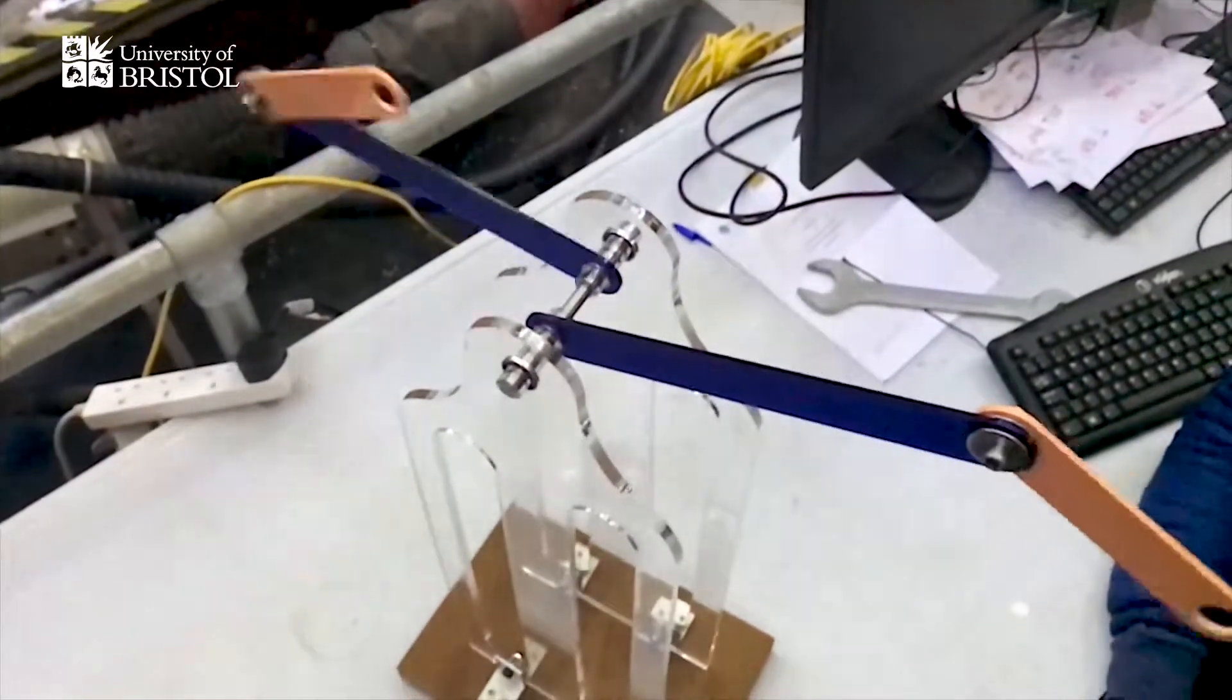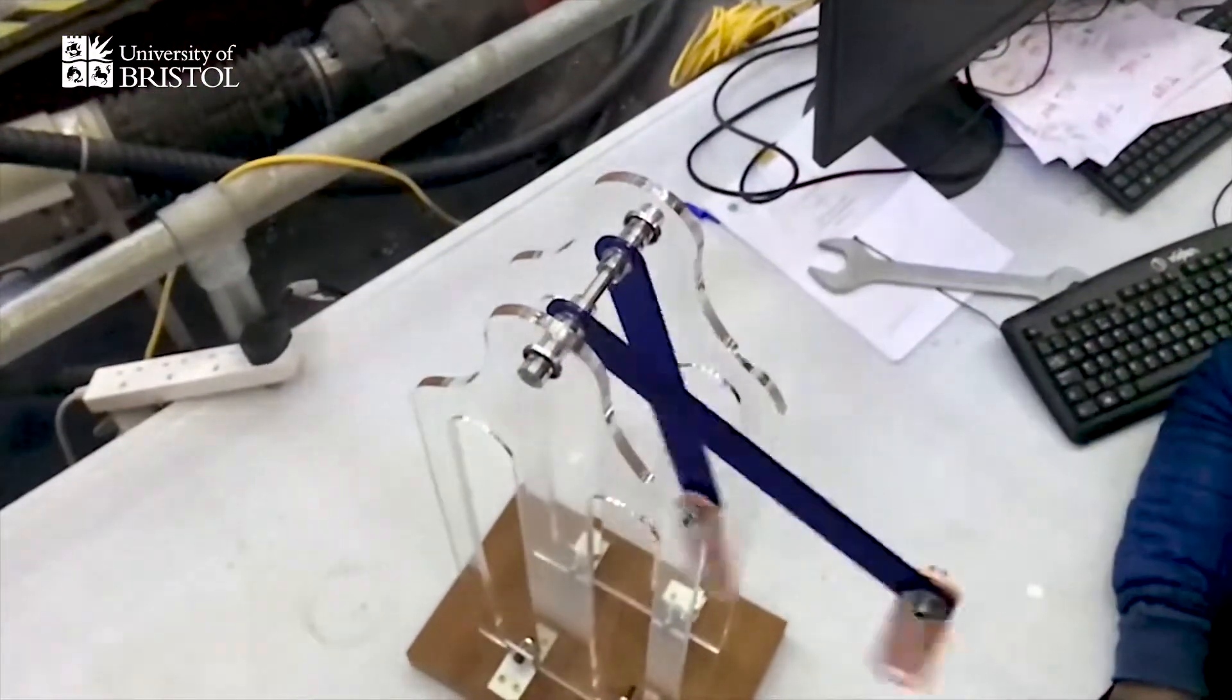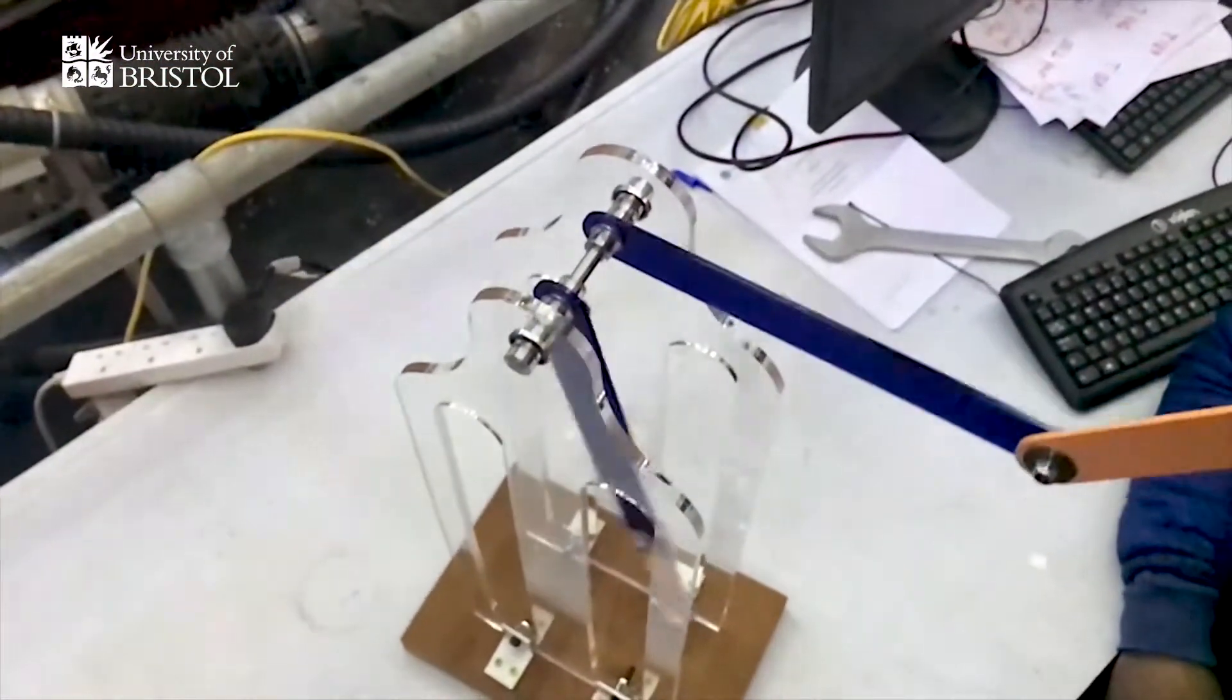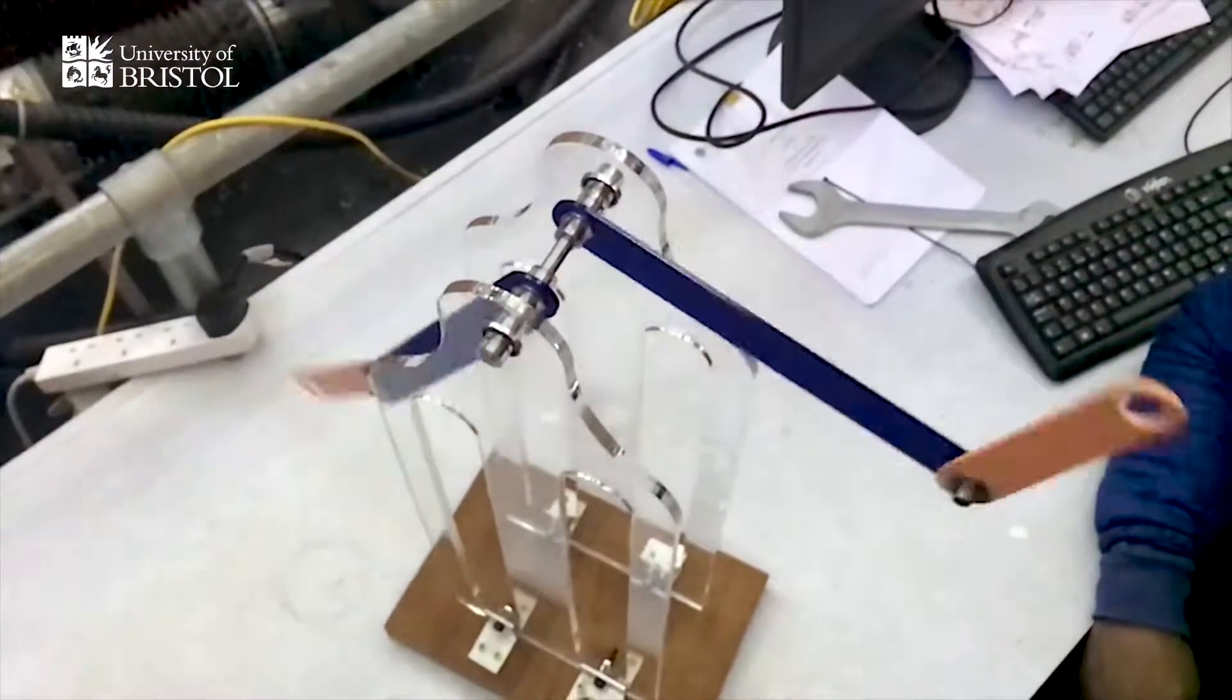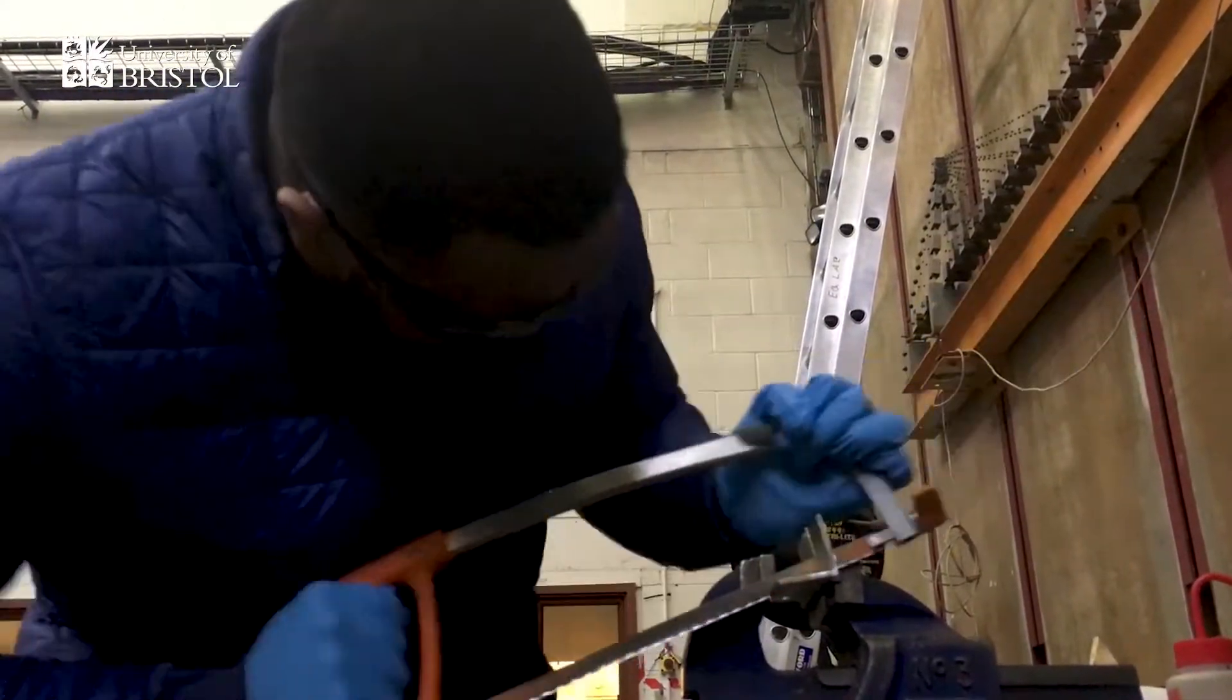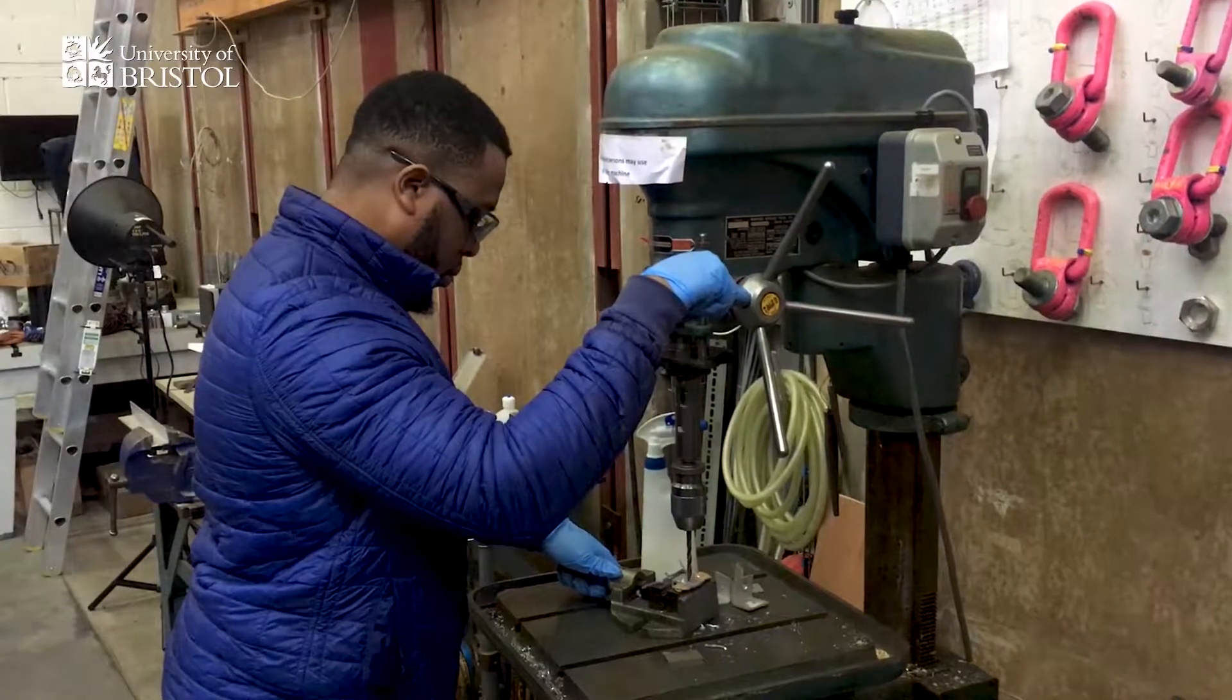Once I laser cut the perspex, the body of the chaos machine, and the actual pendulums themselves, I got some right angled aluminium plates. And I did a quick little drill through them on my drilling machine that's in the Earthquake Lab.